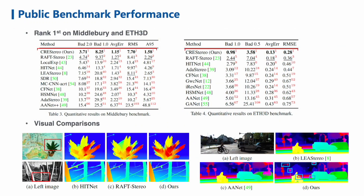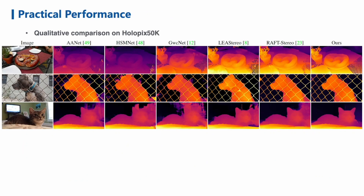Our method ranks first on both Middlebury and ETH3D benchmarks and achieves competitive performance on KITTI among published methods. Our method not only outperforms existing state-of-the-art methods by a notable margin, but also exhibits high-quality details in fine structures. Here we show qualitative comparisons for different methods on Holopix 50K dataset. Our method has a significant advantage in thin objects like cat whiskers and wire meshes, and we also achieve better performance on textureless areas like walls and windows.